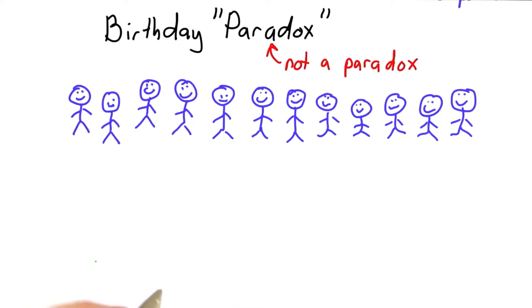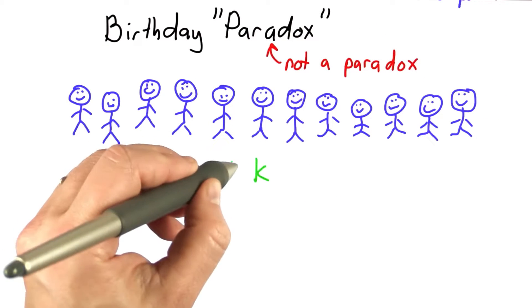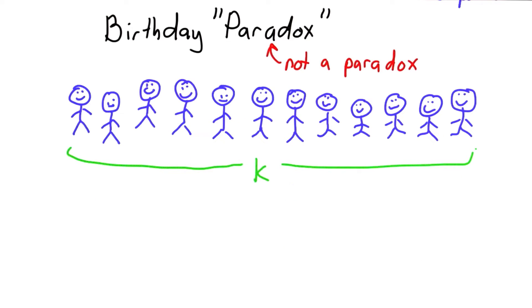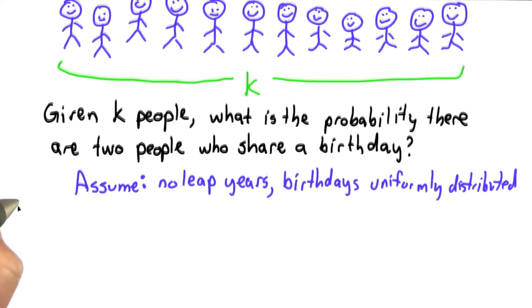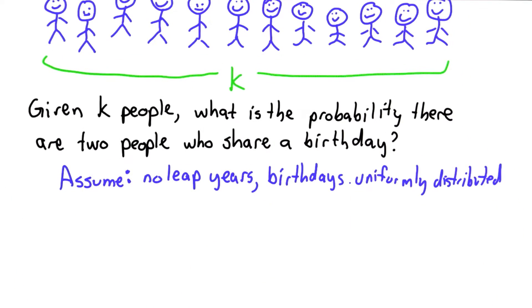The way this is usually framed is you have some group of k people. Let's say it's a kindergarten classroom, and you want to know what the probability that 2 people have the same birthday. The reason this is called the paradox is the answer is actually much higher than most people expect. Let's compute this. We'll assume that there are no leap years and that birthdays are uniformly distributed.